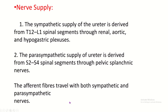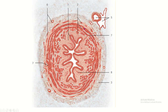The histology of the ureter: from inward to outward, the ureter has mucosa, muscularis externa, and adventitia. The mucosa consists of transitional (stratified) epithelium and a lamina propria formed by loose connective tissue containing vessels and nerves. The muscular part has an inner longitudinal layer, a middle circular layer, and an outer longitudinal layer of smooth muscle cells.